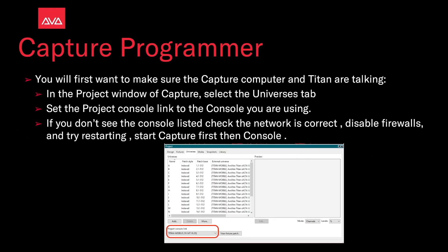You first want to make sure the Capture computer and Titan are talking. In the project window of Capture, select the universes tab and set the project console link to the console you are using. You can see here it's red. If you don't see the console listed, check the network is set correctly, IPs, etc. Disable any firewalls, try restarting — start Capture first, then the console.